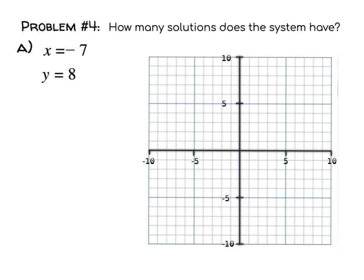If I was to graph x equals negative 7 in red, I'm putting a line that is perfectly vertical because it needs to cross the x-axis at negative 7, so it needs to cross the x-axis at negative 7. That's going to look like a line like that.